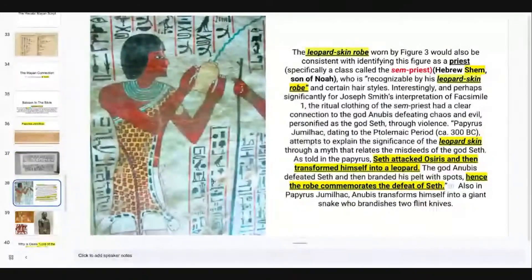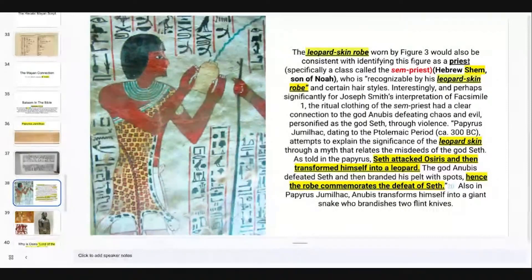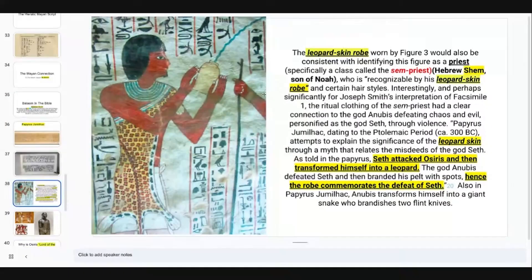The leopard skin robe shown here is consistent with identifying this figure as a priest — specifically a class called the Shem Priest. Notice we just talked about how the black jaguar or Balam was attached to the priesthood, and even to become a priest, a priest would have to go through a ceremony with jaguars, walking over them. We find the same thing in ancient Kemet, where a priest is recognizable by his leopard skin robe. This word Shem is just an S and an M — in Hebrew it's the same: the son of Noah, or the father of the Shemites. When they talk about people being anti-Semitic, they're talking about Shem, basing this off of Genesis.